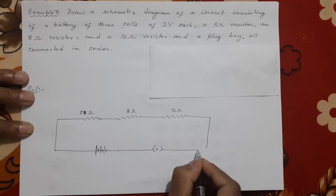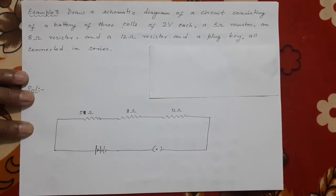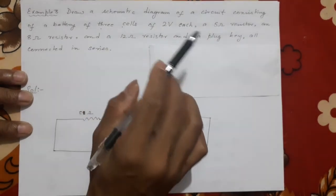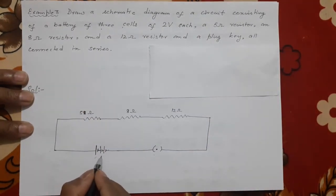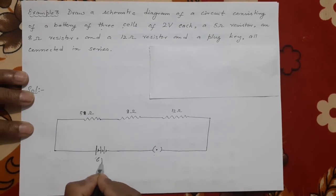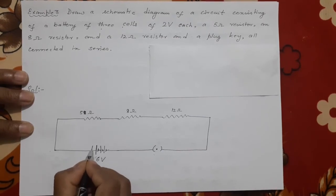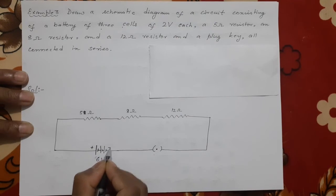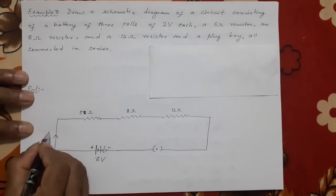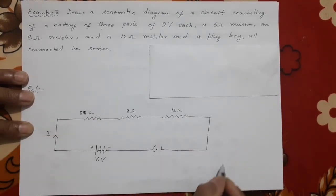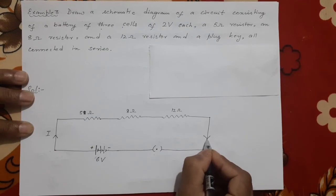Okay, clear. Now what are the things? 5, 8, 12 is shown here. It is 2 volt, 2 volt, 2 plus 2 plus 2 is how much? 6 volt. This side is plus of the battery, minus of the battery.